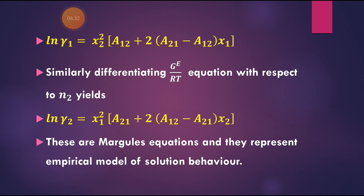This is the expression for ln γ₁. Similarly, differentiating the G/RT equation with respect to n2 gives: ln γ₂ = x1²·[a21 + 2(a12 − a21)·x2]. The same differentiation procedure is followed with respect to n2 while maintaining constant n1.